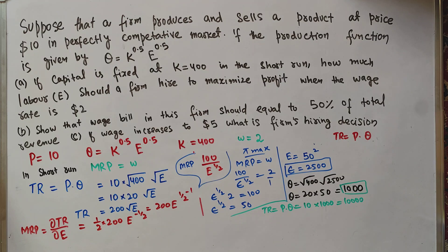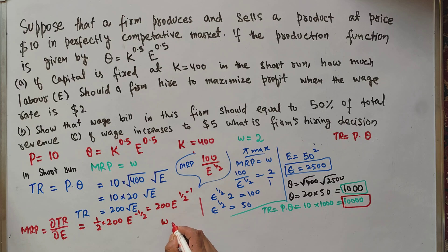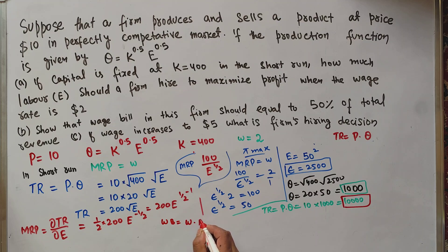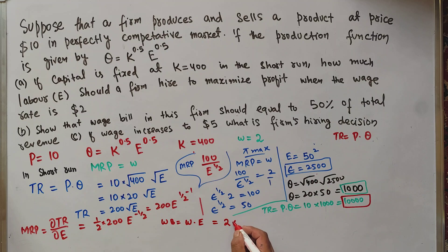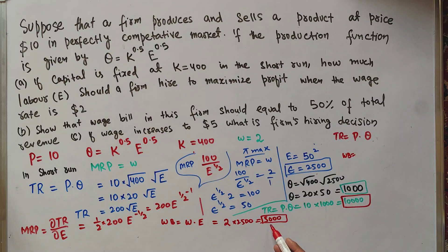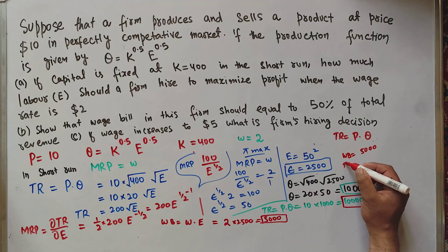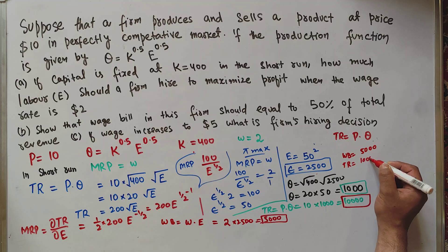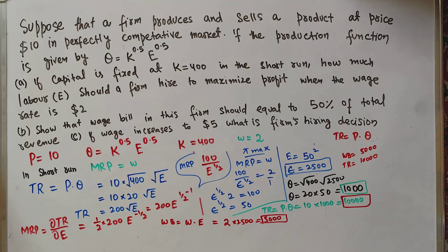Now we find the wage bill. Total wage bill = wage rate × units of labor employed = $2 × 2500 = $5,000. We can see that the wage bill of $5,000 is exactly 50% of total revenue of $10,000. This confirms that the wage bill equals 50% of total revenue.